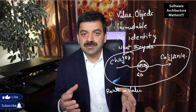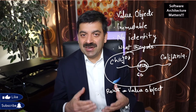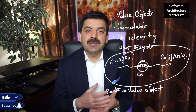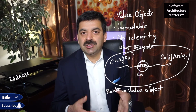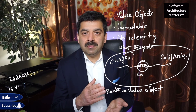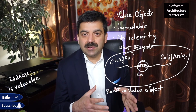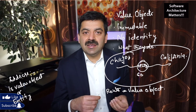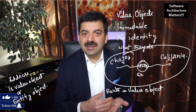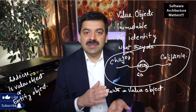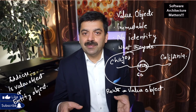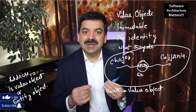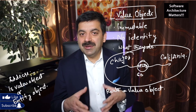Eric also gives the example of address — is an address a value object or an entity object? It depends on the context. Suppose you are living in a hostel and sharing a room, and both you and your roommate use the same address to receive Amazon orders. In that case, address is a value object. But if a letter must be sent to a unique address, then address becomes an entity object. So context determines whether address is a value object or entity object.